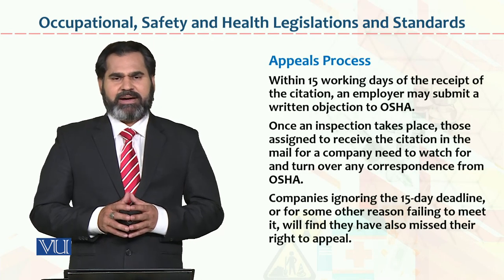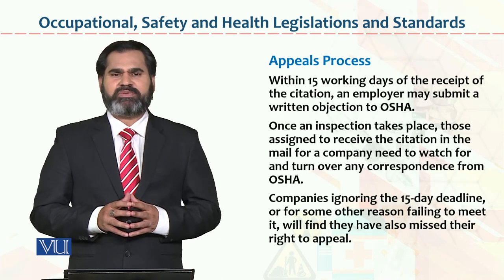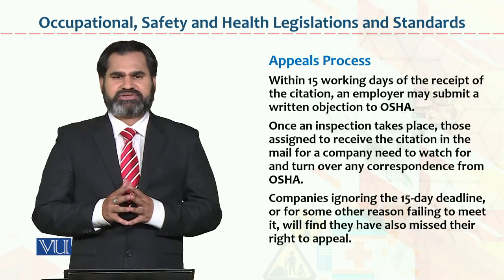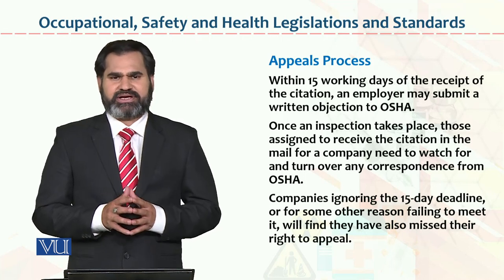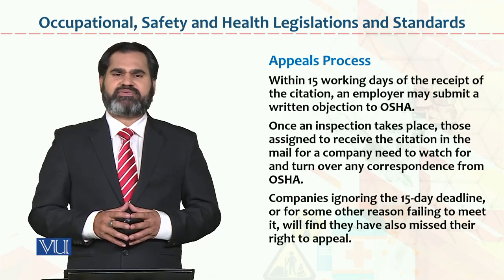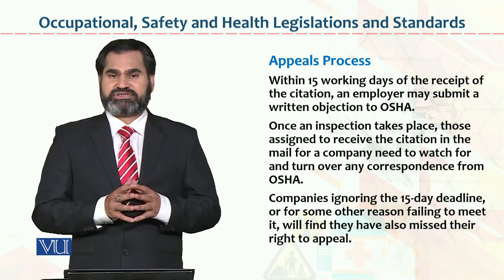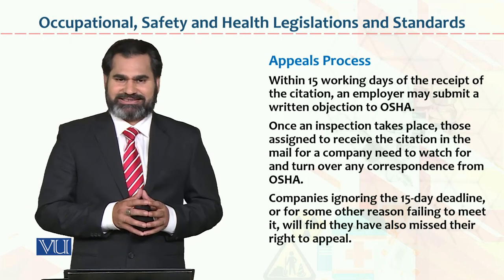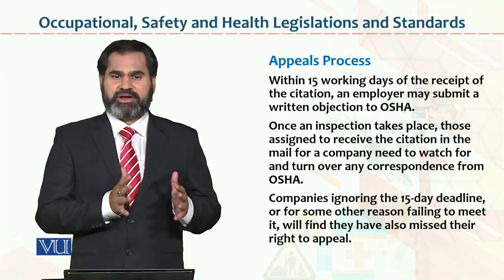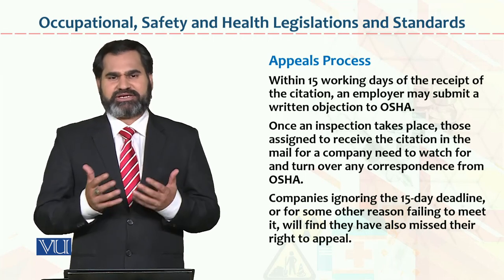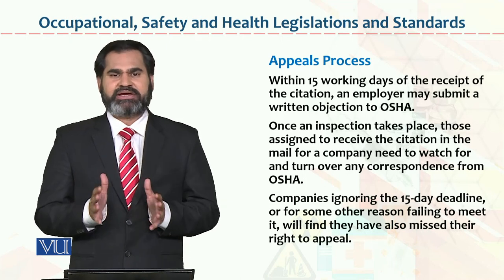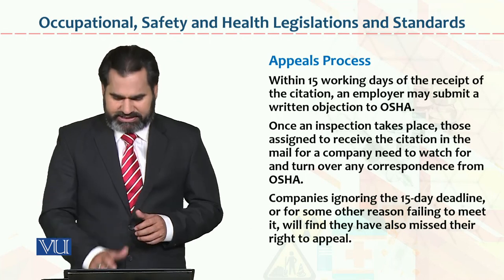Appeal process. Before the appeal process, it is important to know that OSHA can also impose a penalty along with its report. After that, the right to appeal is given to the employer, so that they can file an appeal against that decision. The employer is given 15 days to file an appeal against that decision. In light of that appeal, the complete report can be revisited, a fresh inspection or even a fresh investigation can be conducted, or the same decision may be continued as it is.